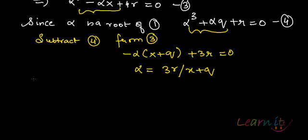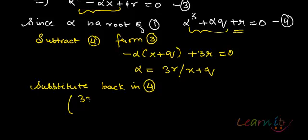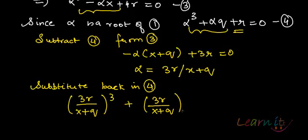Let me just substitute this value. Substitute back in 4. Let me just substitute back here the value of α. So what I have is 3r by (x+q) cubed plus q times 3r upon (x+q) plus r equals to 0.